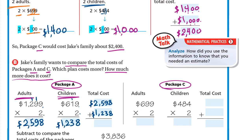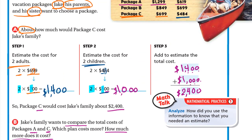Now add $2598 plus $1238 for the total cost of package A. 8 plus 8 is 16, write 6 carry 1. 1 plus 9 is 10 plus 3 is 13, write 3 carry 1. 1 plus 5 is 6 plus 2 is 8. Then 2 plus 1 is 3. So the total cost for package A is $3836.